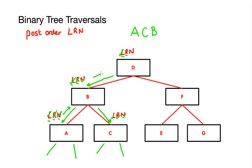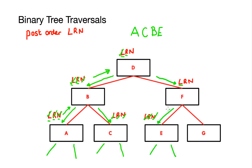Once completed I've done all the rules at B, so I move back up to D and tick off the left subtree rule. The next step is to traverse the right subtree. I move down to node F — the first rule states I must check the left subtree. I move down to node E and rewrite my rule — left, right, node. I check the left subtree from E: non-existent. I check the right subtree of E: also non-existent. Then I move back up and take the node, writing it down. I've checked off all rules at node E so I move back up to node F.